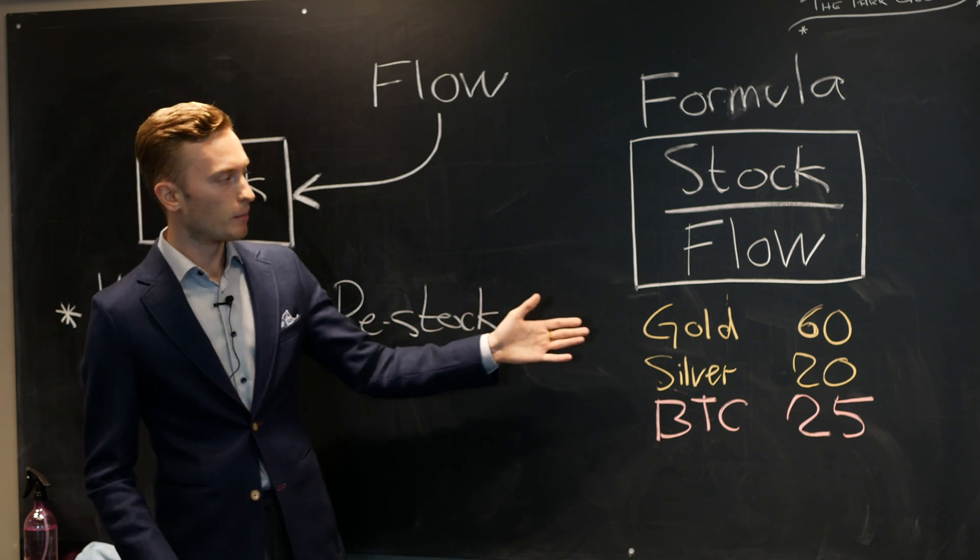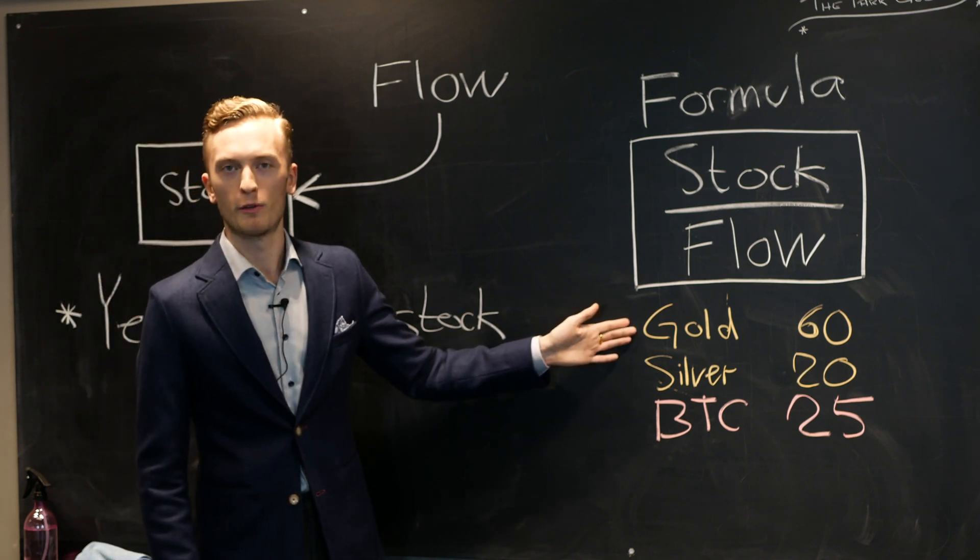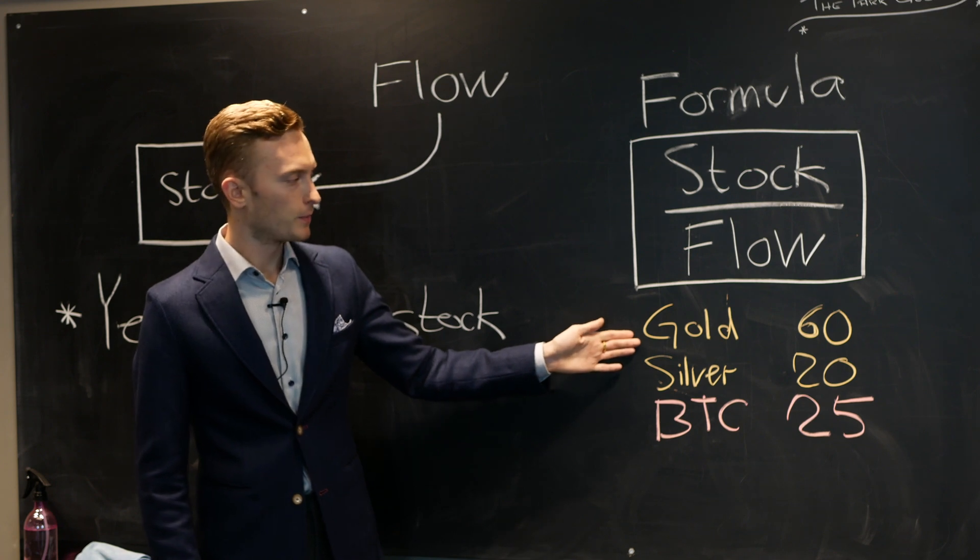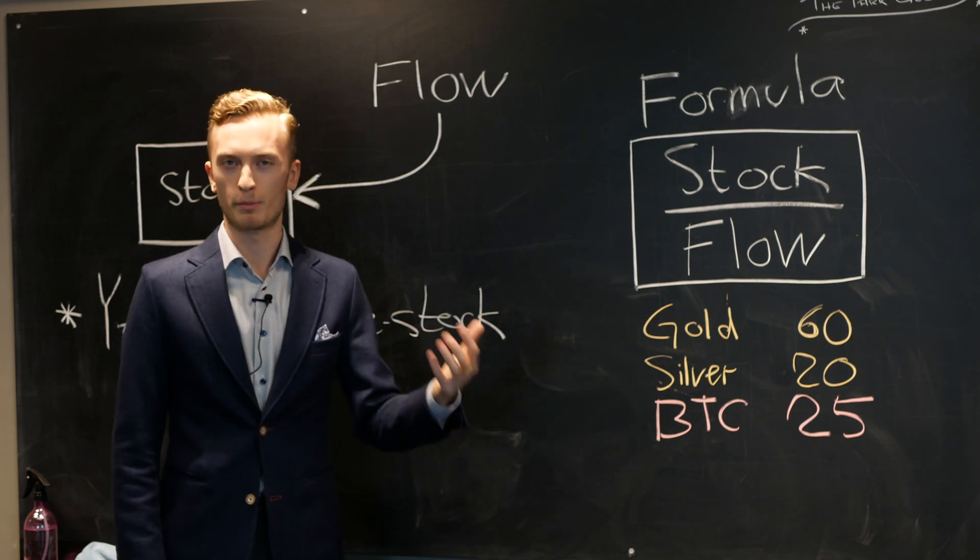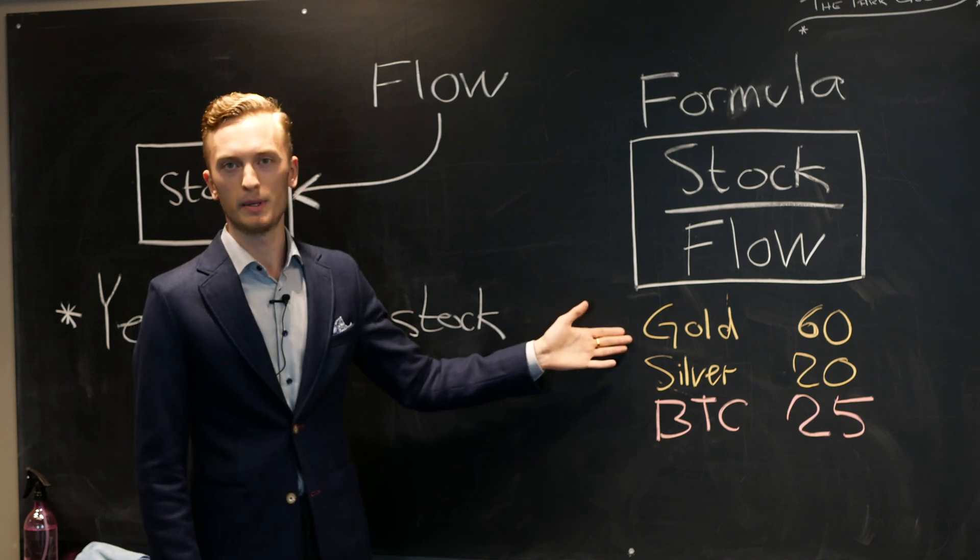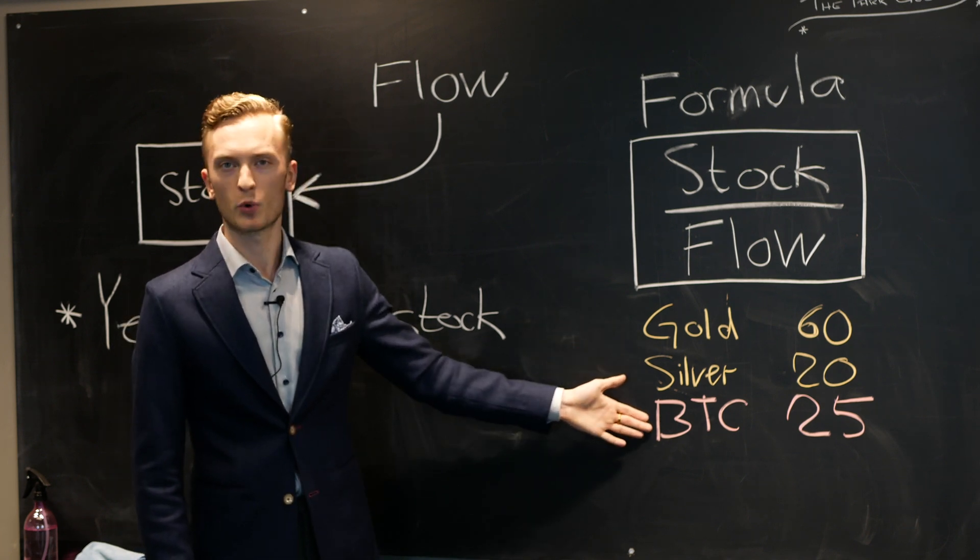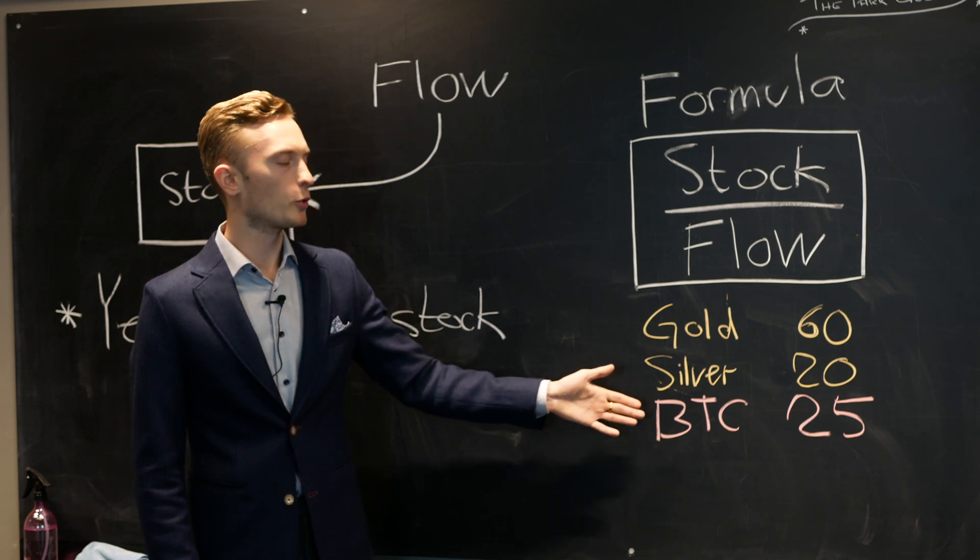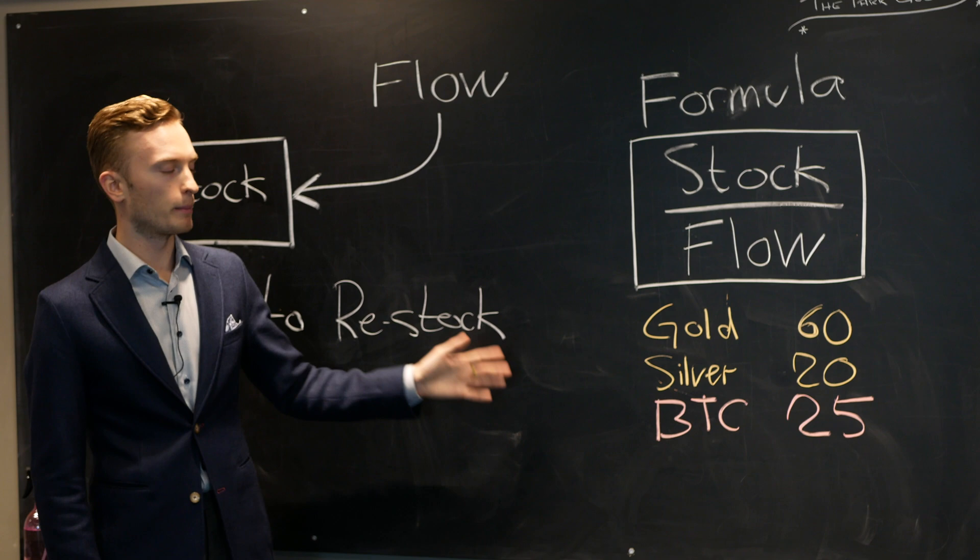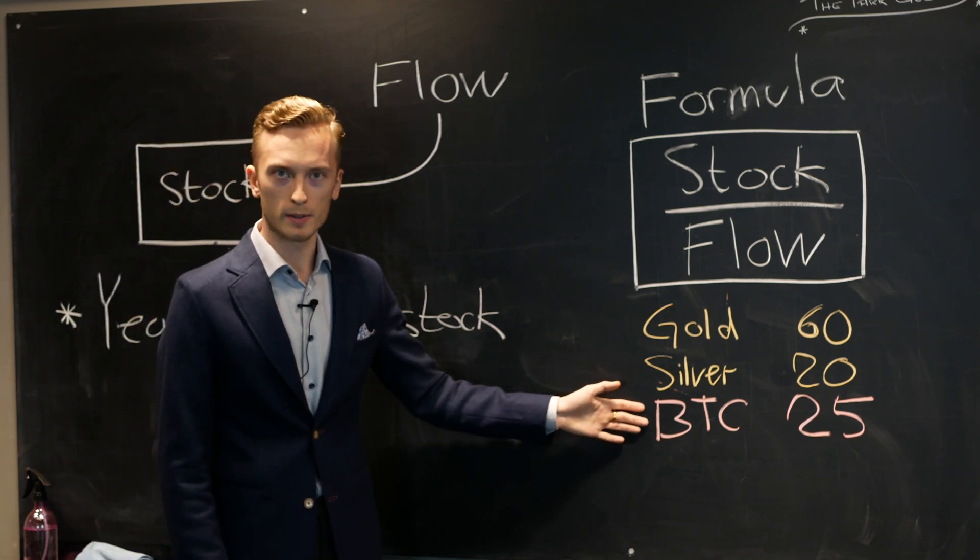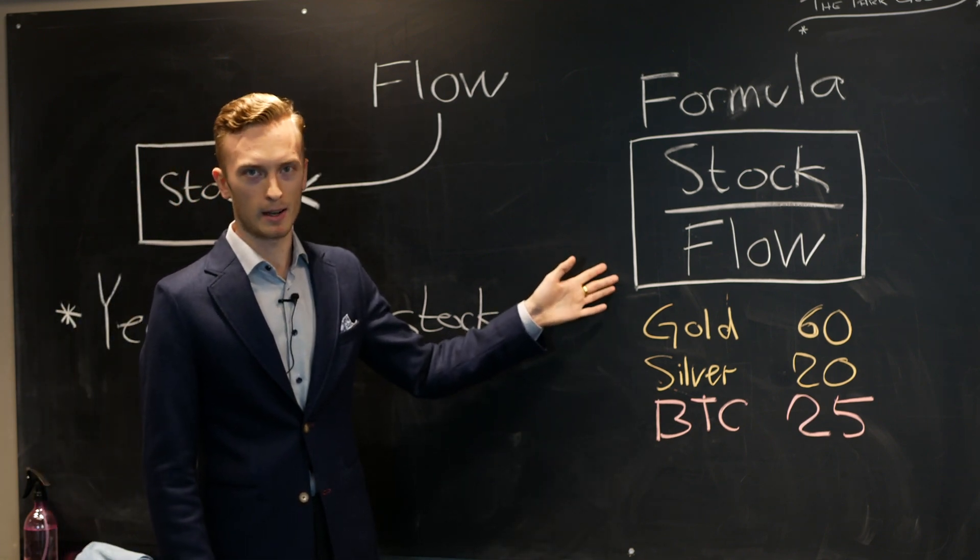And that is why people have been hoarding gold for thousands of years now. Because it is a scarce asset that is hard to find and produce and can't be faked easily. The same thing is of course true for Bitcoin. So people want to hold on to these assets because it takes such an incredible amount of time to produce new ones. And that is what this model can tell us.